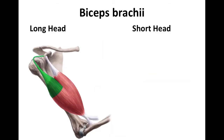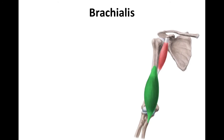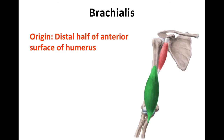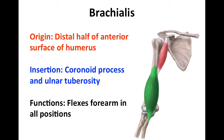The long head originates from the supraglenoid tubercle of the scapula, while the short head originates from the coracoid process, which is a bony prominence of the scapula that looks like a beak. Next is the brachialis muscle. The point of origin for the brachialis muscle is the distal half of the anterior surface of the humerus. The brachialis inserts on the coronoid process and ulnar tuberosity. Its function is to flex the forearm in all positions.